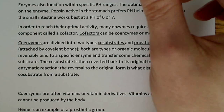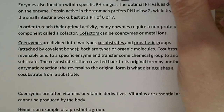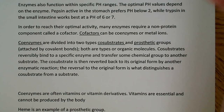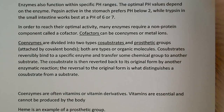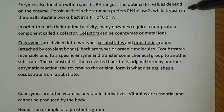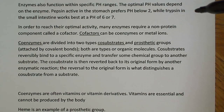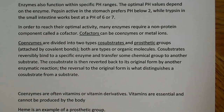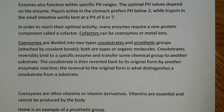Enzymes also function within specific pH ranges, and the optimal pH value depends on the enzyme. Two classic examples: pepsin, which is active in the stomach, prefers a pH below 2 — which makes sense given the stomach's very low pH. While trypsin, in the small intestine, works best at a pH of 6 or 7. So there's a clear difference based on where these enzymes are located and what their function is.